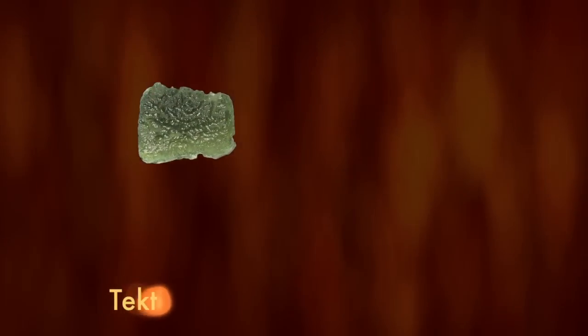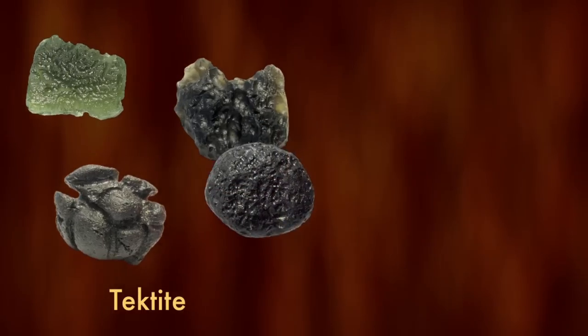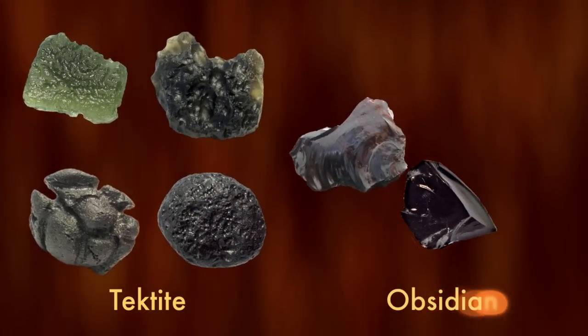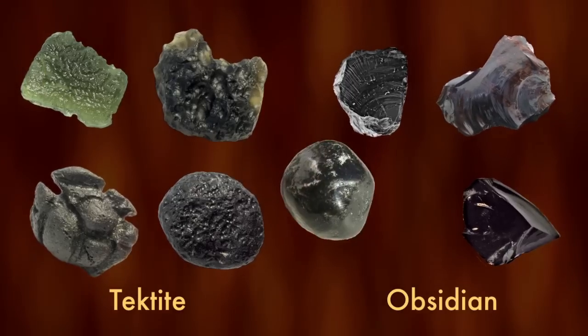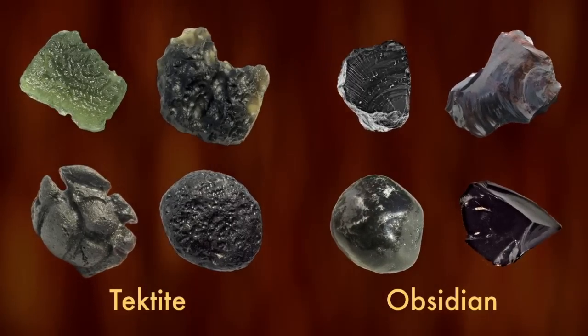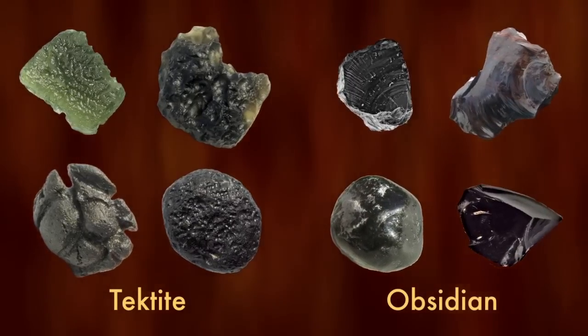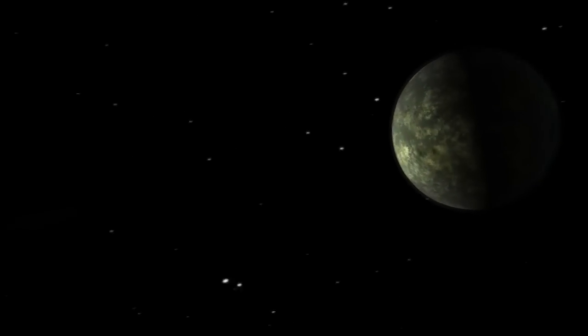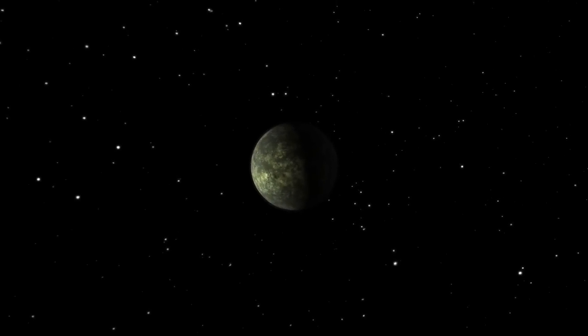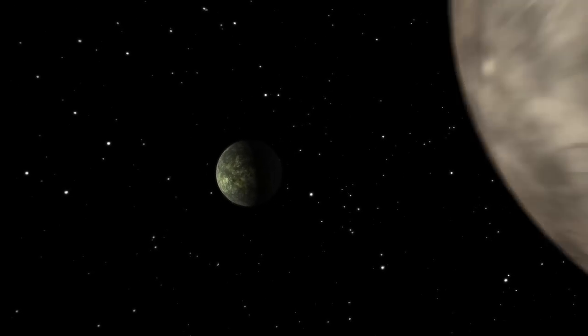Tektites are hardened chunks of lava found around meteor impacts on Earth, and obsidian is volcanic glass. Vaporized rocks can form silicon monoxide gas. You don't get this kind of material by just smashing a couple of asteroids together. The evidence suggests something much more cataclysmic.